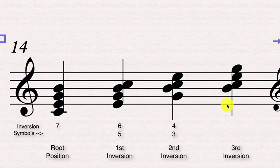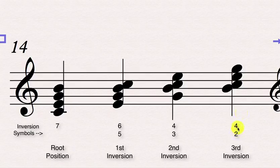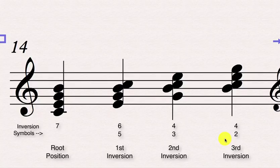And then finally, for a third inversion seventh chord — since there's a fourth possibility where the seventh is now the lowest sounding note — we call this one 4-2, indicating that there's the interval of a fourth above the bass and the interval of a second above the bass. Yes, there's still a 6, and if you wanted to write 6-4-2 that's fine, but the standard accepted way to indicate a third inversion seventh chord is just to write 4-2.